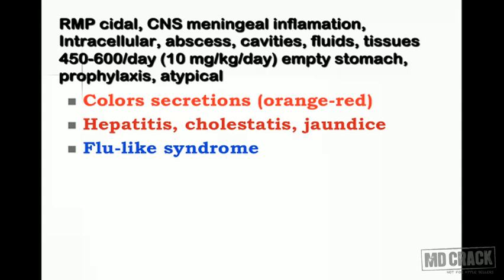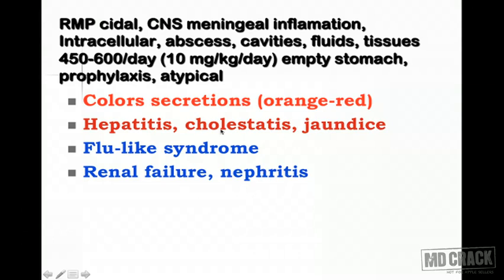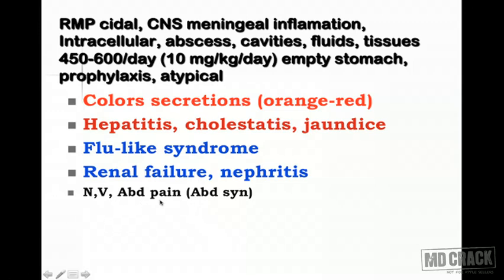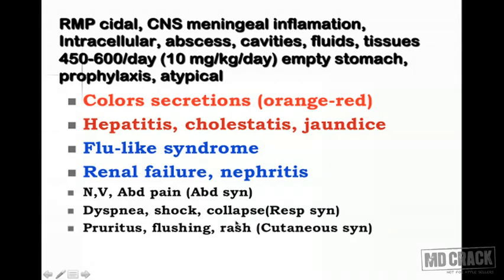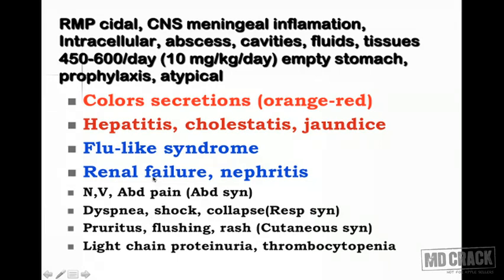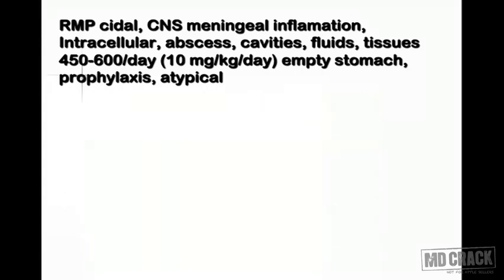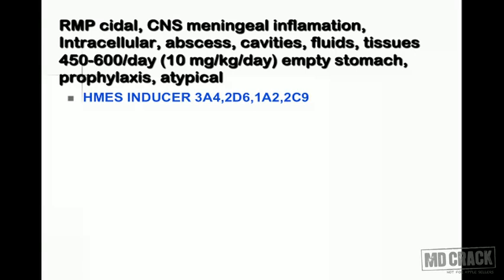Rifampin can also produce a flu-like syndrome. On long-term use it can lead to renal failure and nephritis, and various system-specific syndromes — abdominal syndrome, respiratory syndrome, and cutaneous syndrome. It can also cause light-chain proteinuria and thrombocytopenia.